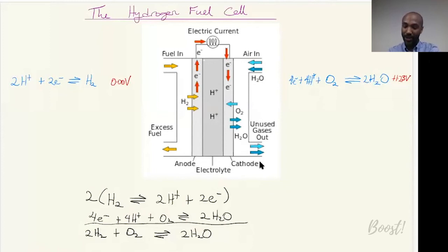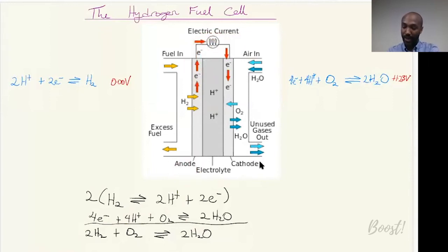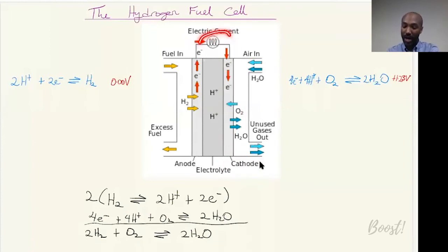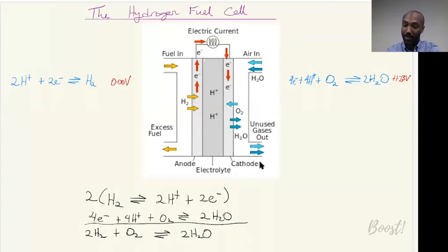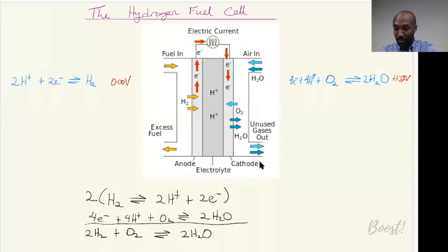The fuel cell harnesses electrical energy produced as electrons flow from the anode (hydrogen electrode) to the cathode (oxygen electrode), and we can use that energy to run components such as a light bulb or a motor. It is a very important technology for producing clean energy.